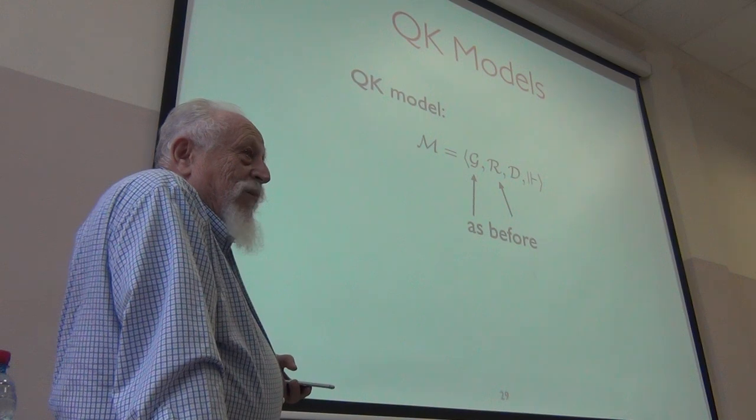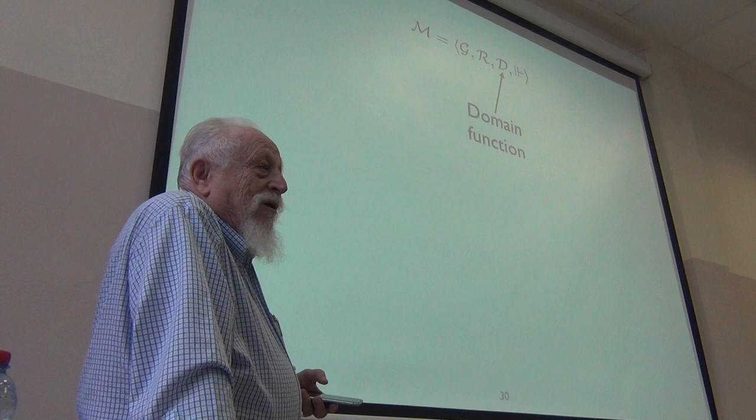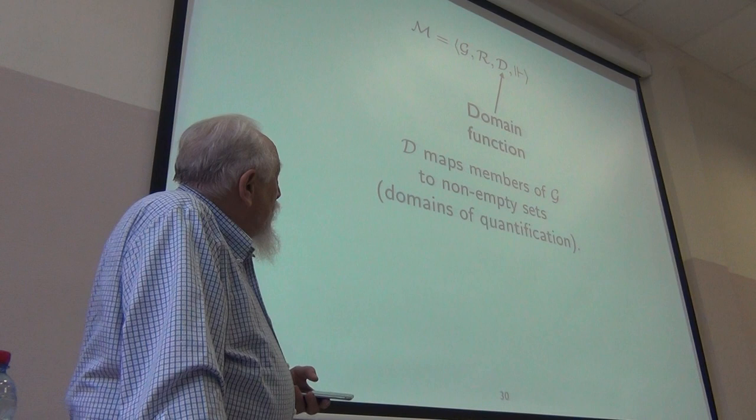Possible worlds and accessibility are as before. The new thing is this, which is a domain function. It's a varying domain function that maps possible worlds to non-empty sets.